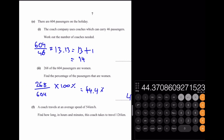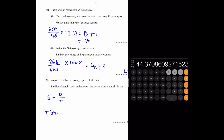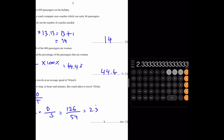Part F: A coach travels at an average speed of 54 km/h. Find how long it takes to travel 126 km. Time = distance ÷ speed = 126 ÷ 54 = 2.333... hours = 2⅓ hours = 2 hours and 20 minutes.